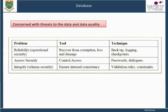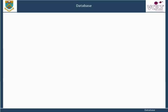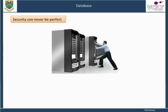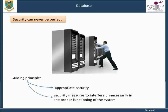What is always important is that you are very clear on just what asset needs protection. As a summary, this is shown in the chart. You need to accept that security can never be perfect. There always remains an element of risk, so arrangements must be made to deal with the worst eventuality — steps to minimize impact and recover effectively from loss or damage to assets. The two guiding principles are appropriate security: you do not want to spend more on security than the asset is worth, and you do not want security measures to interfere unnecessarily in the proper functioning of the system.